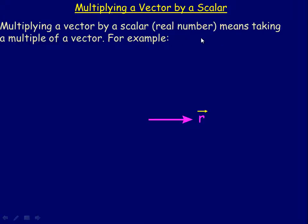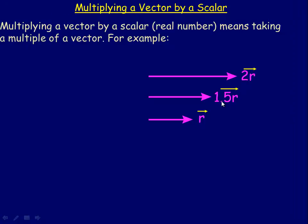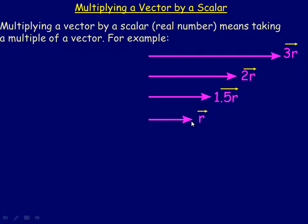Multiplying a vector by a scalar means taking multiples of the vector. For example, if this is vector r, then this is what 1.5r would look like — it's in the same direction as r but 1.5 times as long. This is what 2r would look like, twice as long as r and in the same direction. And that would be 3r.